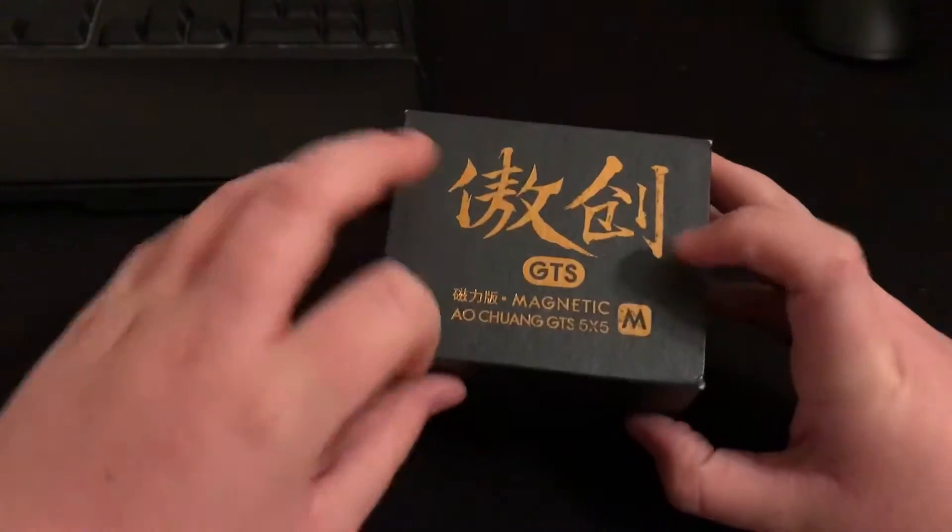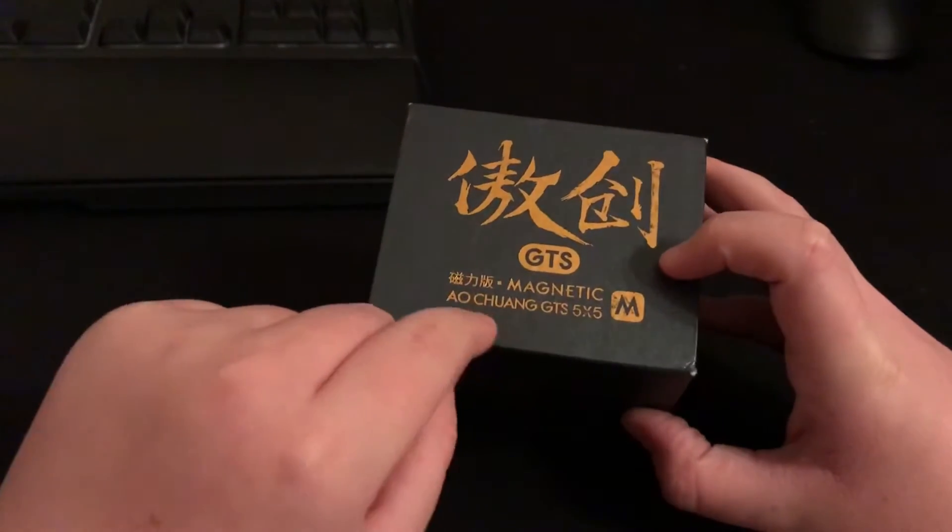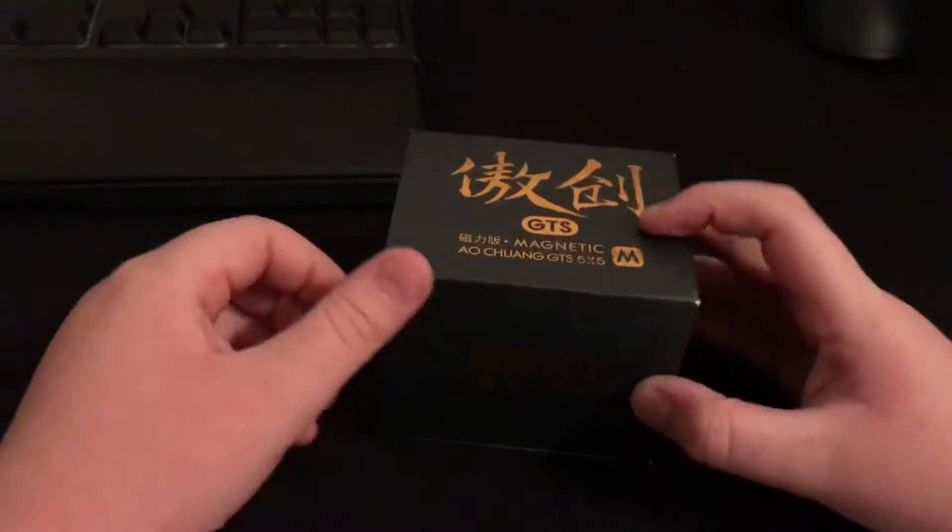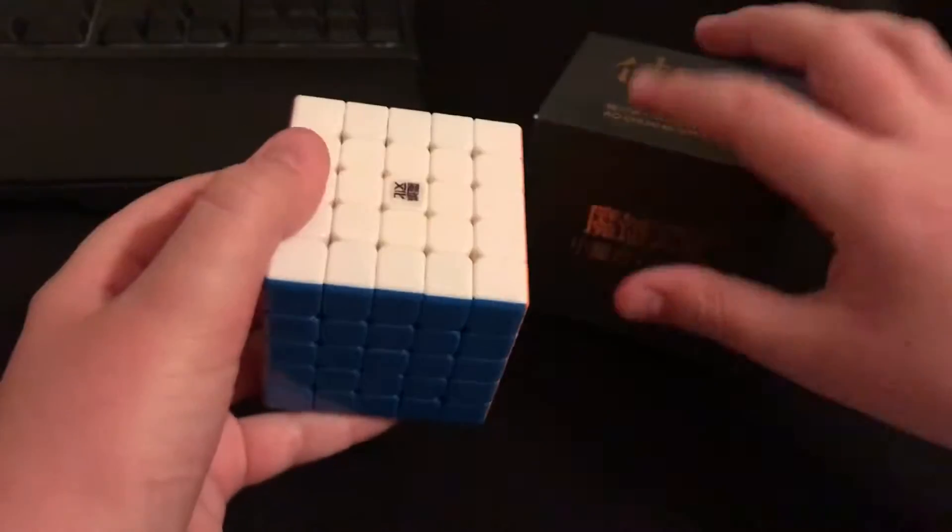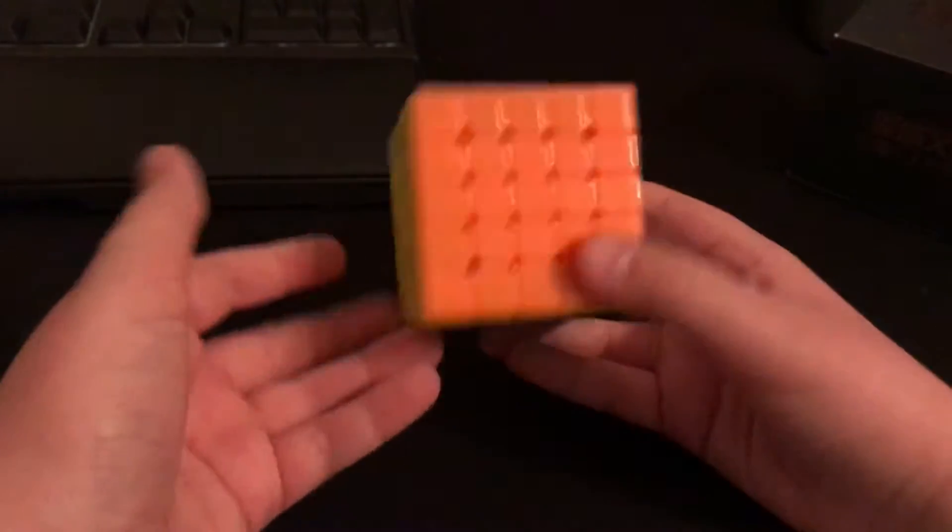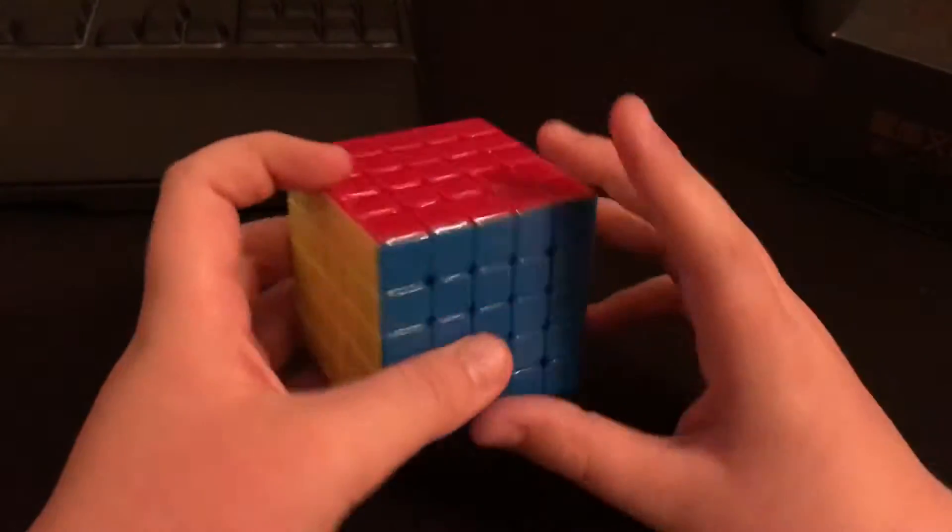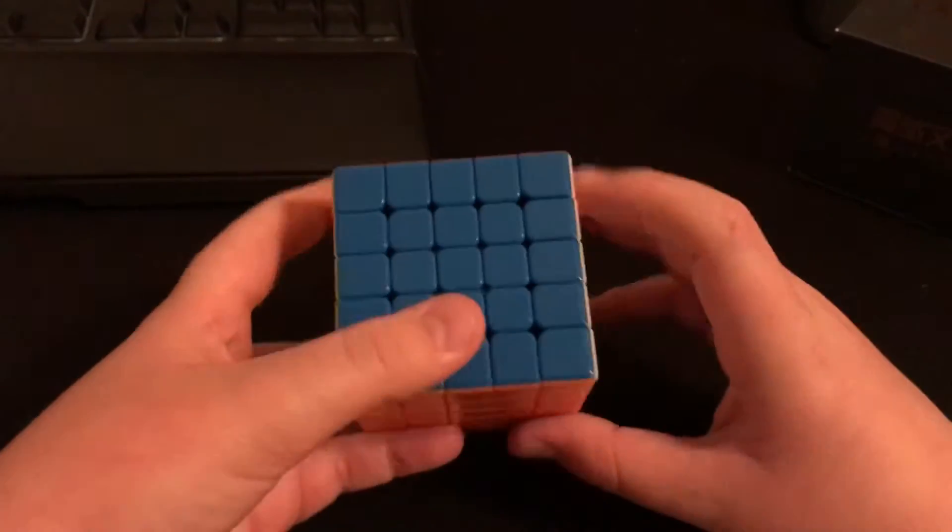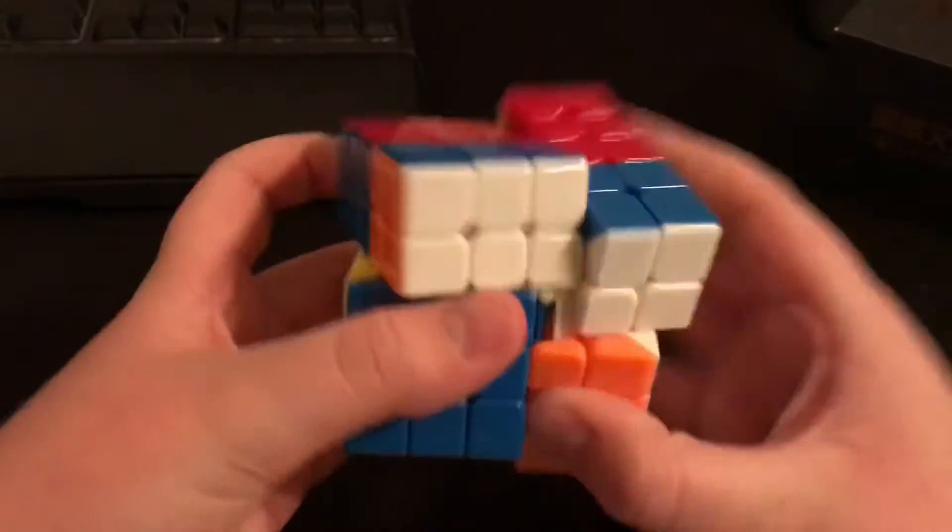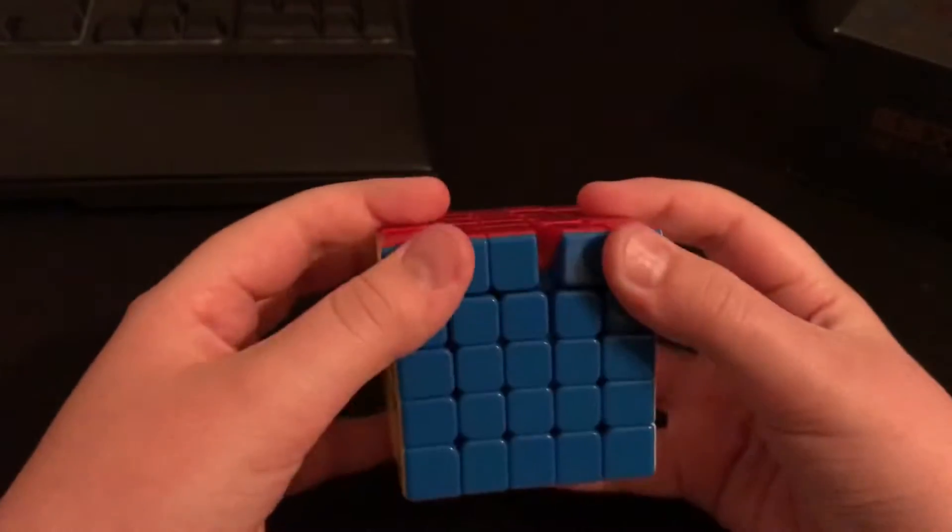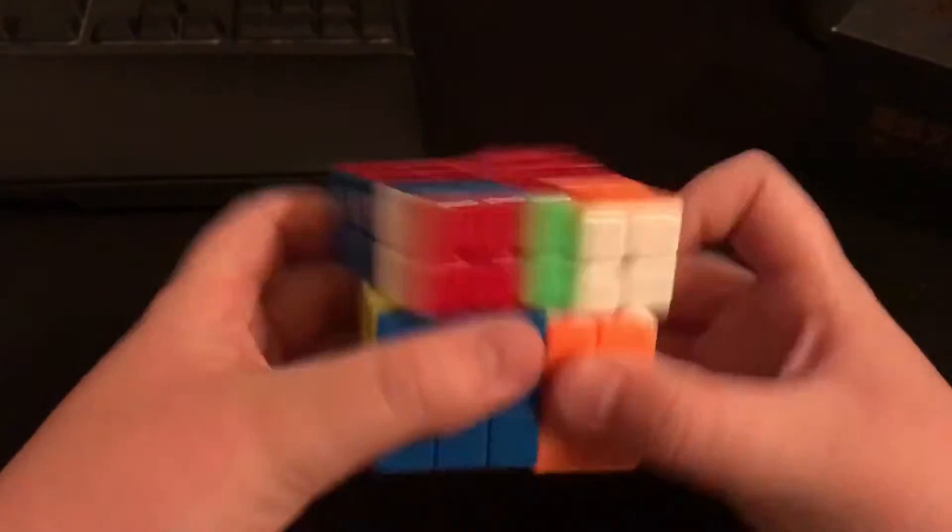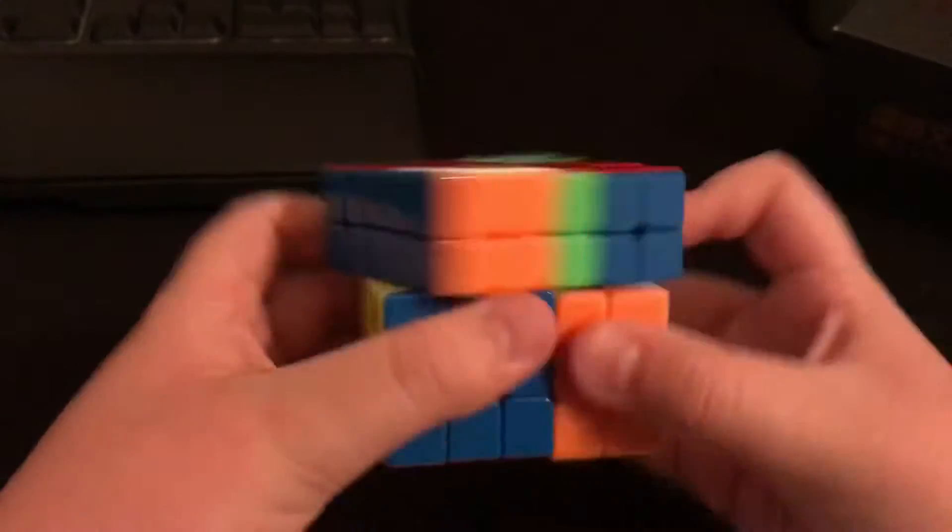This is the GTS AuChang GTS 5x5. It's magnetic and I got this for Christmas. It's already been opened because I've been using it and I've already solved it. It locks up a few times, but that's just because it's a big cube and that's going to happen. Overall, it's actually really good.